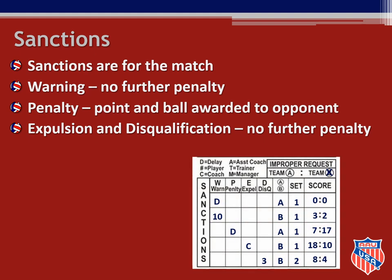In this example, team A received both a delay warning and a delay penalty in the first set. Team B number 10 received an individual warning, team B received an improper request, team B's coach was expelled, and team B's player number 3 was disqualified in the second set.